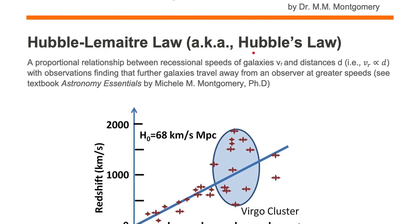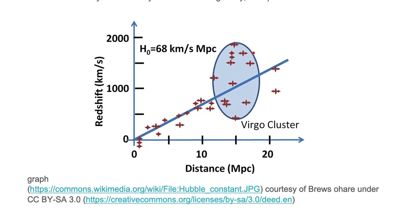Let's take a look at this Hubble-Lemaître Law or Hubble's Law in this graphical representation. We have recessional speeds on the vertical axis, v sub r, and on the horizontal axis we have distance d.